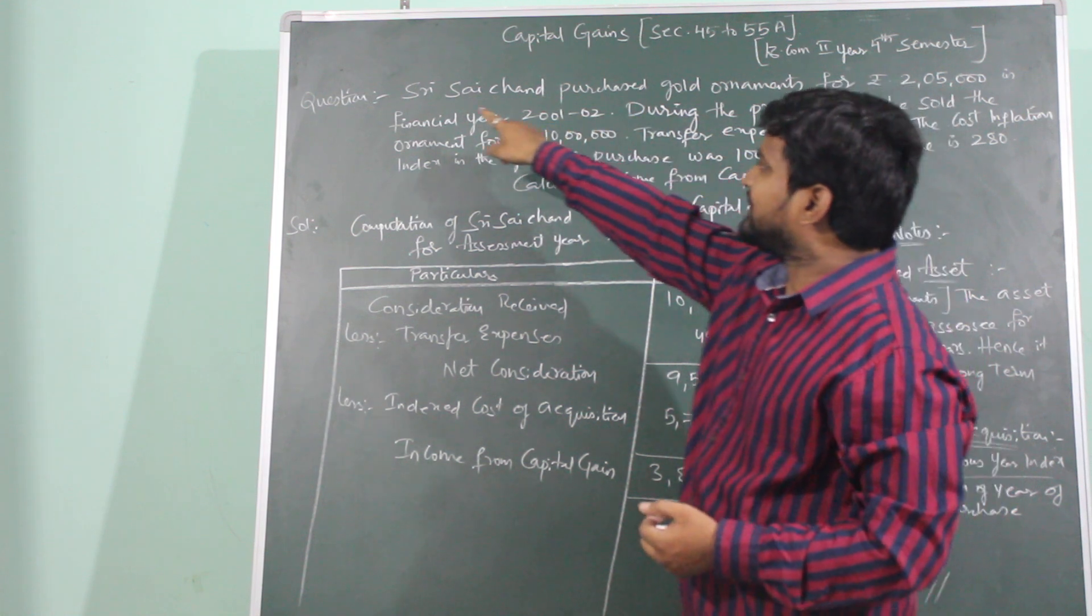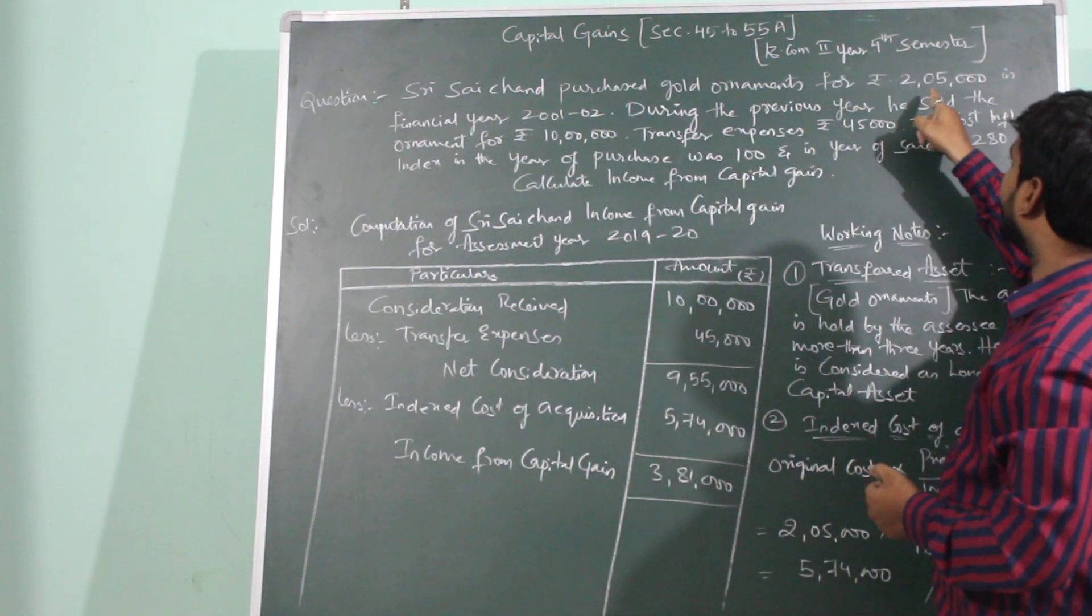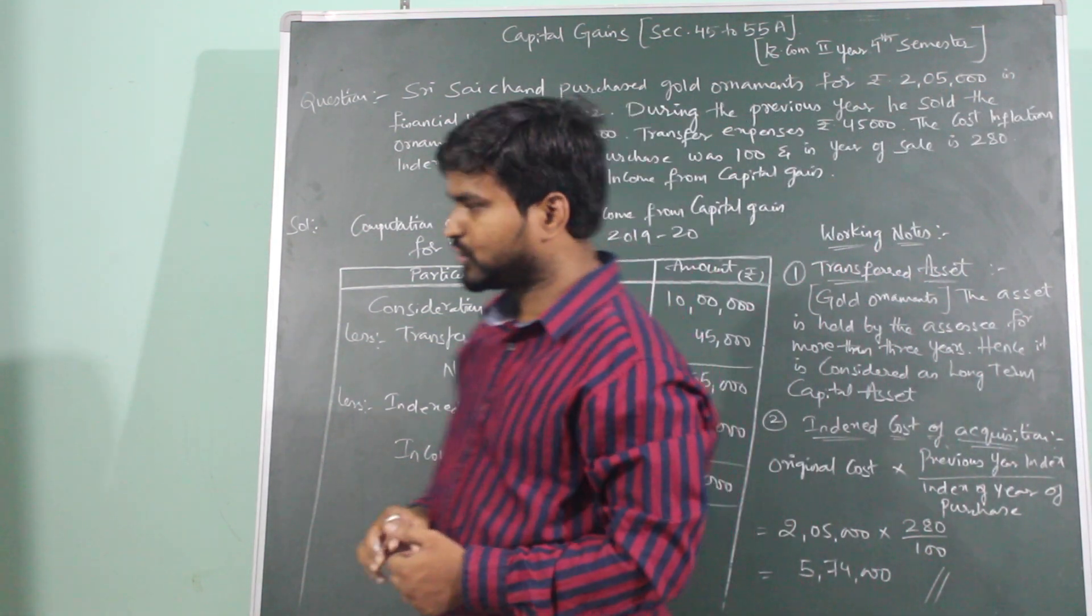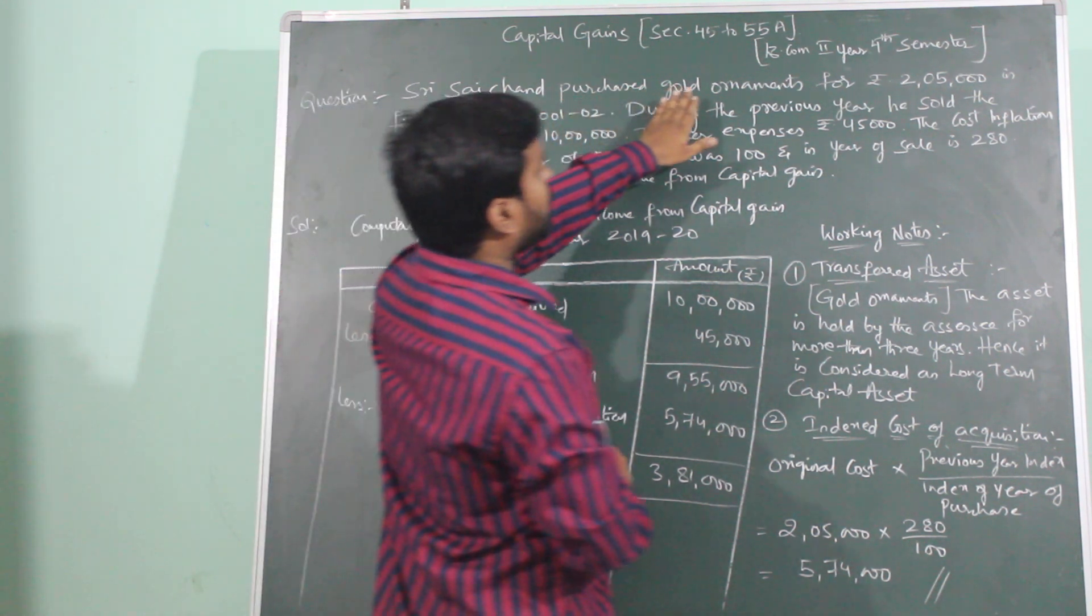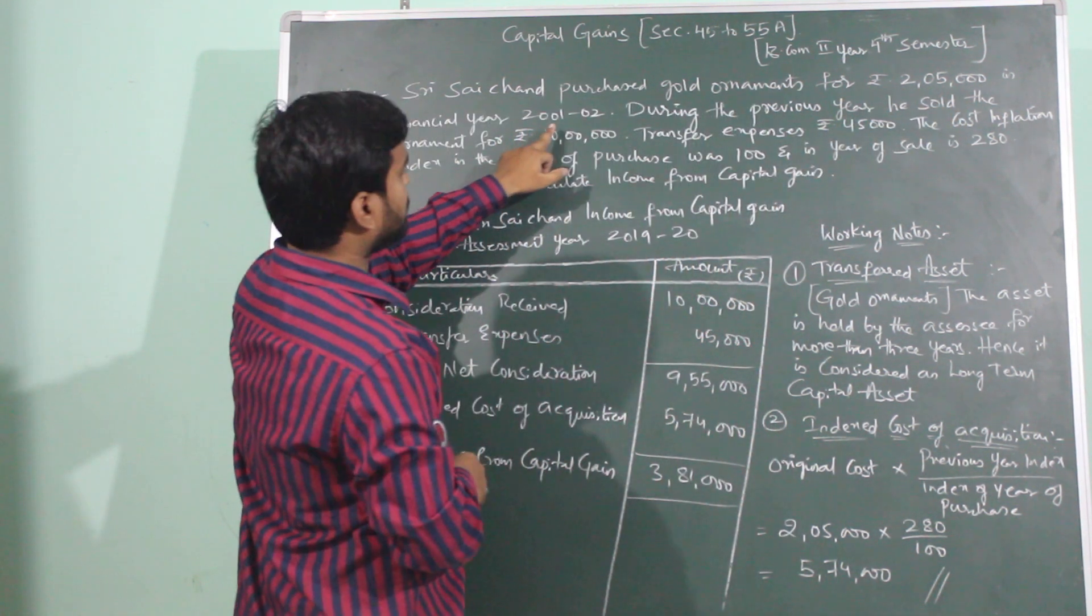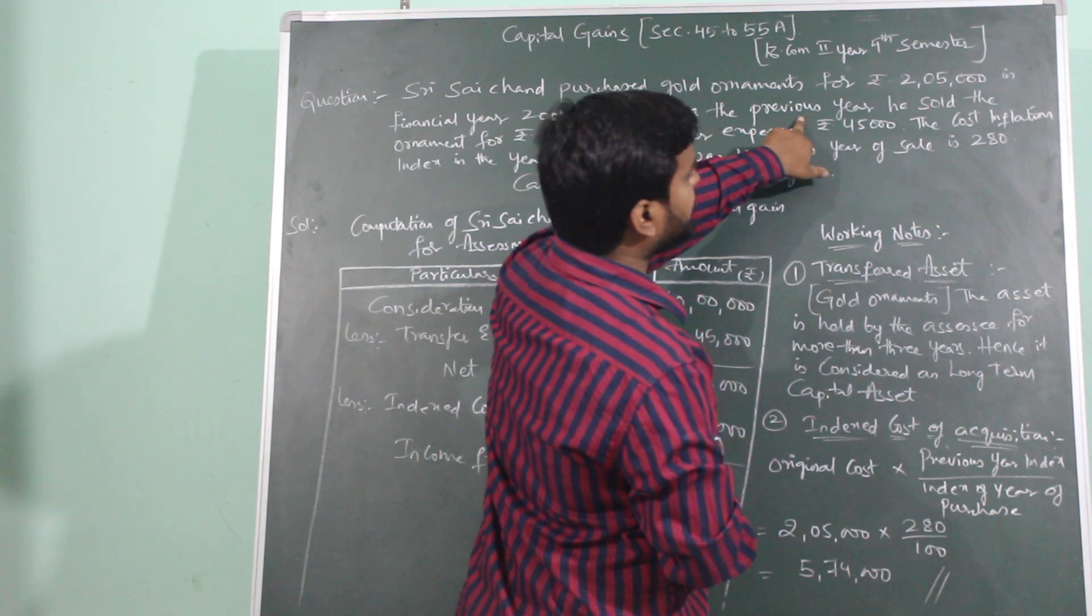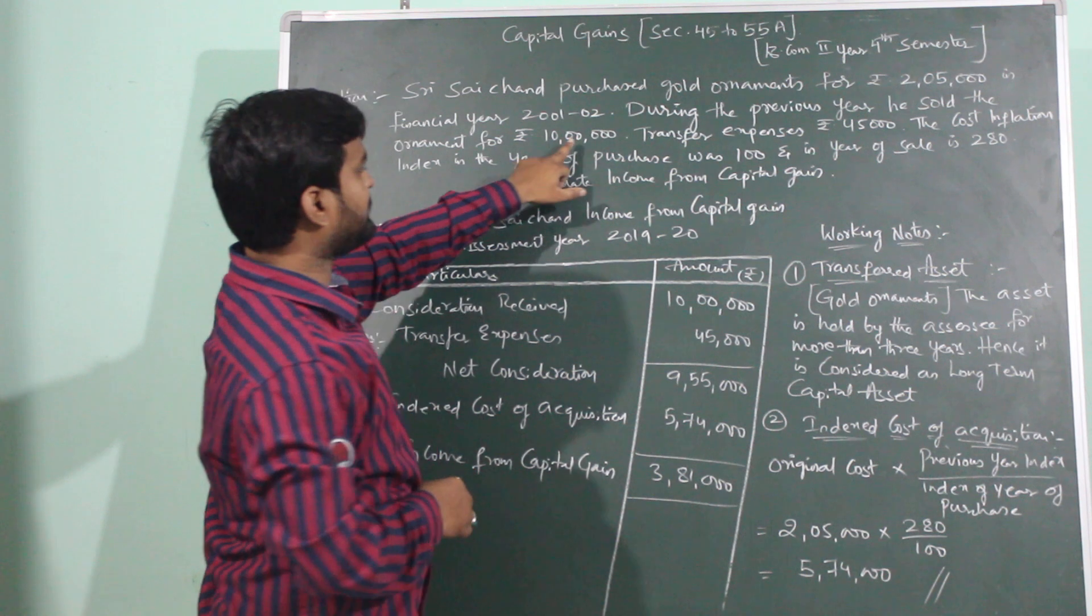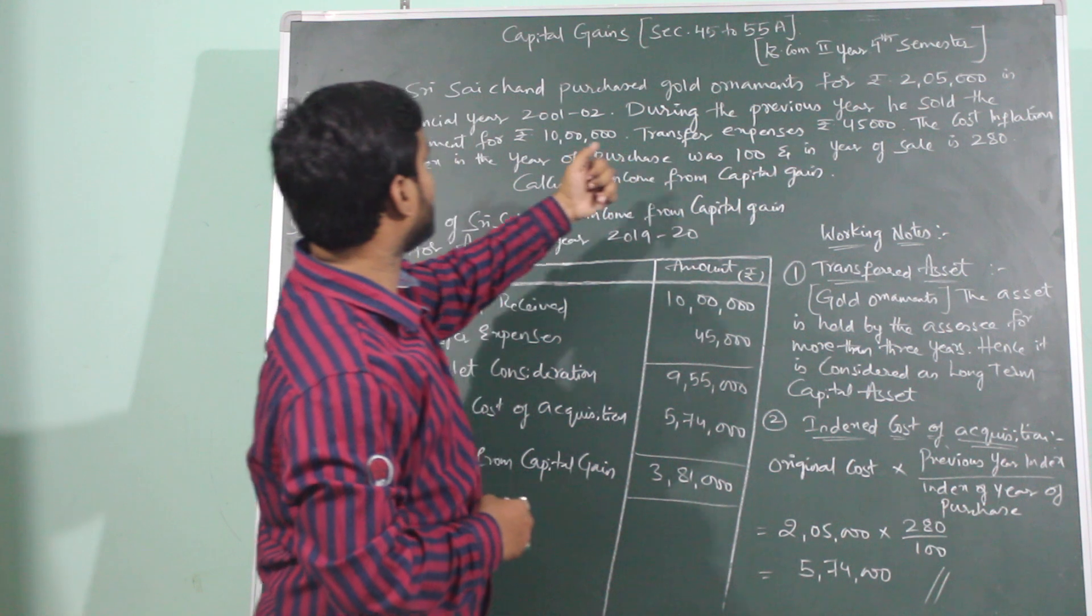Question for gold ornaments: Shri Sai Chan purchased gold ornaments for Rs. 2,05,000 in financial year 2001-2002. During the previous year 2018-2019, he sold the ornaments for Rs. 10,00,000. So, how much did he buy for? 2,05,000. How much did he sell for? 10,00,000.